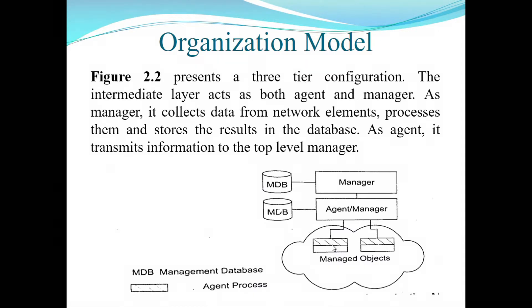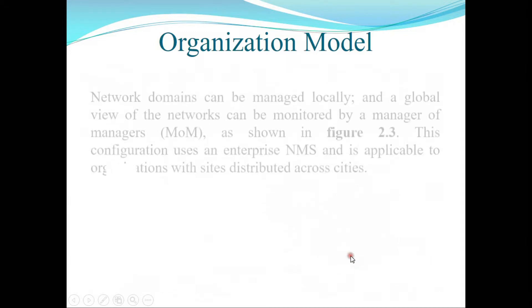Agent process. In Figure 2.2, there is a 3-tier configuration. The intermediate layer acts as both agent and manager. As manager, it collects data from network elements, processes them, and stores the result in the database. As agent, it transmits information to the top-level manager. In this figure there are two MDBs: one connected with the manager and another connected with the agent or manager. This is the managed object.